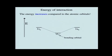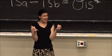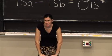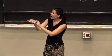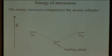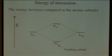Let's think about the energy of interaction. When we were talking about constructive interference, we had more electron density between the two nuclei, which lowered the energy of the molecular orbitals — bonding orbitals are lower in energy. But for antibonding orbitals, the energy is higher — it's increased compared to the atomic orbitals. So we label the antibonding orbital higher in energy than our 1s atomic orbitals.